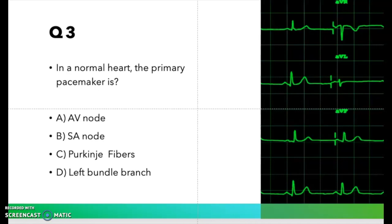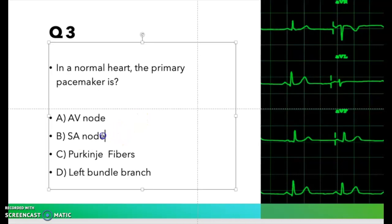Think about where the normal heart rate of 60 to 100 beats per minute is initiated from. Think about which part of the heart this rhythm comes from — it's basically the pacemaker of the heart. The correct answer is the SA node. I'm going to bold this so you have the correct answer.